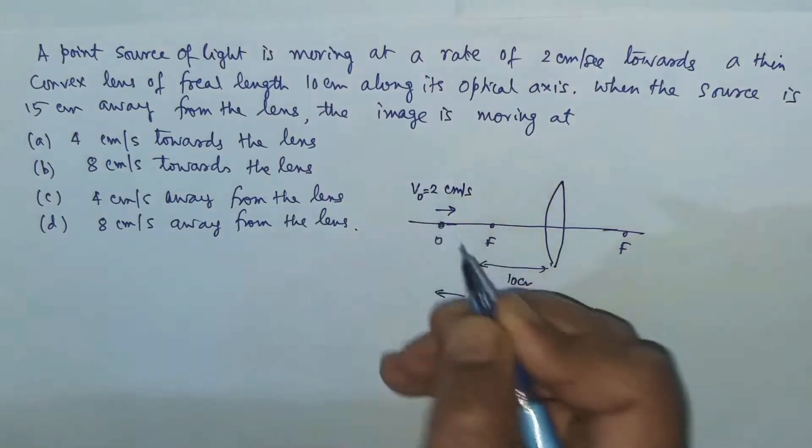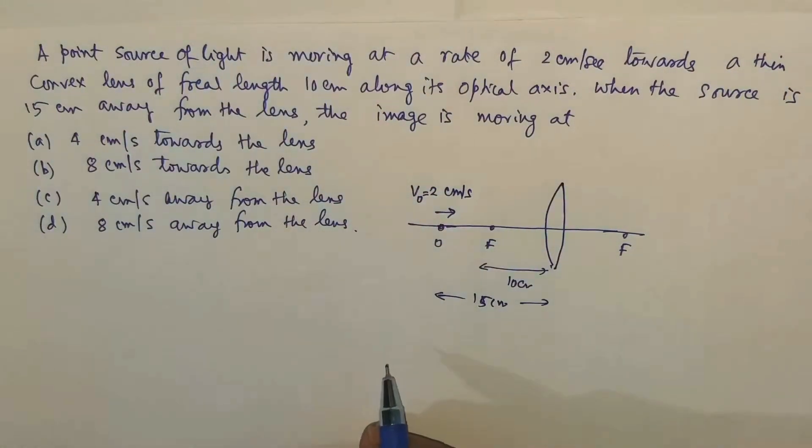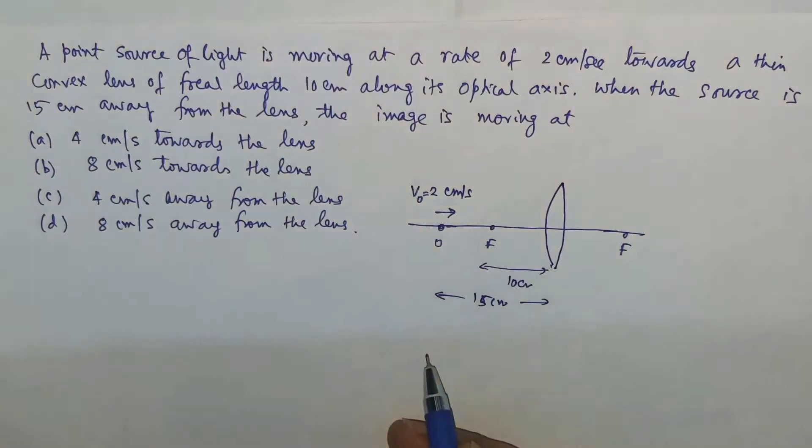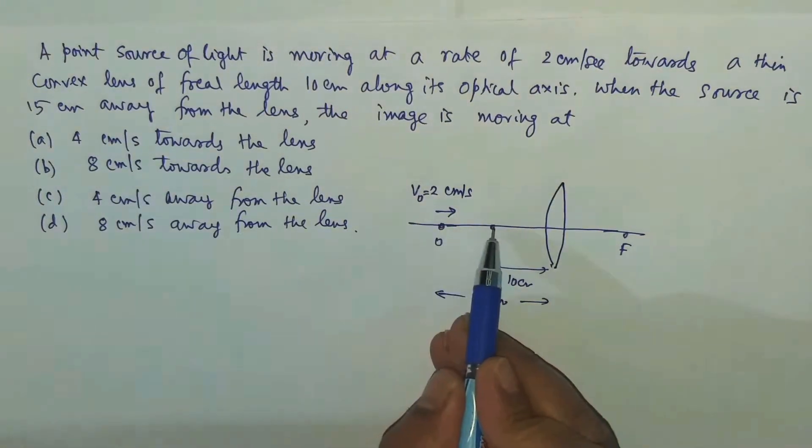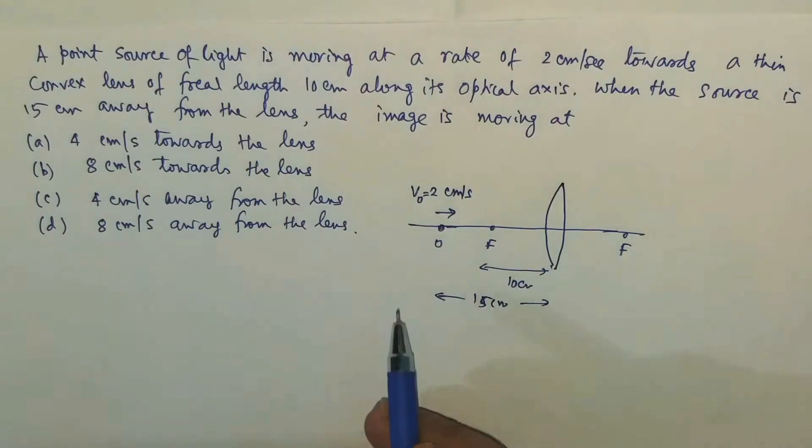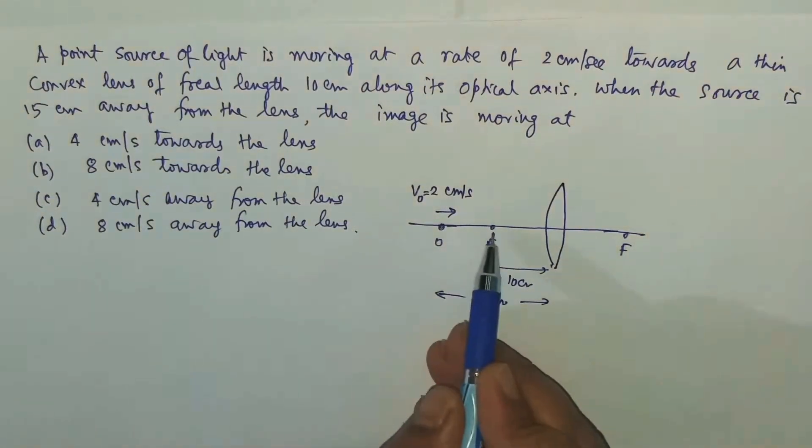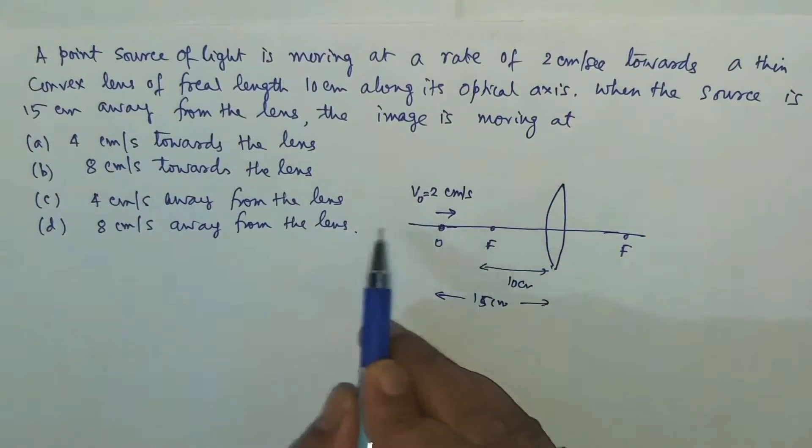Now, do not rely upon too much mathematics to decide about the direction of movement of the image. Just observe: if the object is at focus, then where will the image be formed? The image will be formed at infinity. And when the object is in between focus and center of curvature, then where will the image be formed? That you know, it will be formed beyond the center of curvature.